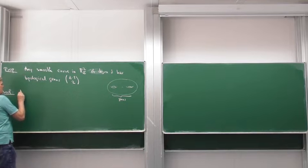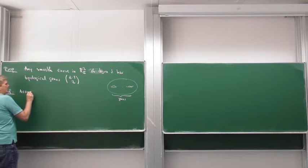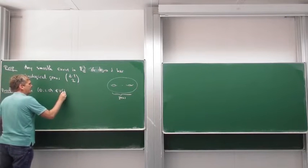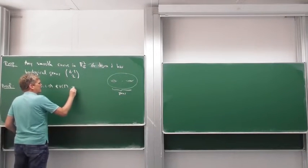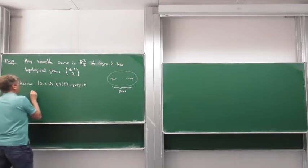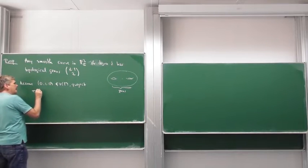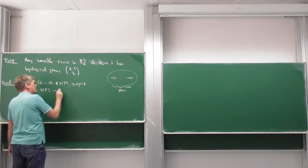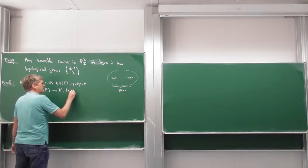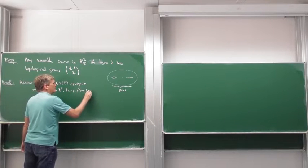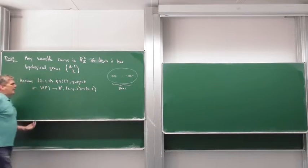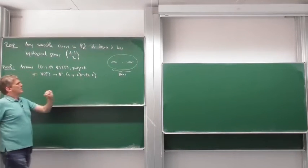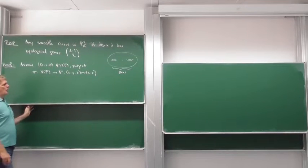We can assume without loss of generality that the point [0:1:0] is not on the curve. Then we project to P1, calling the map pi, which takes the curve to P1 and sends [x:y:z] to [x:z]. So we just drop the y-coordinate, which means in the affine picture we project (x,y) to x.